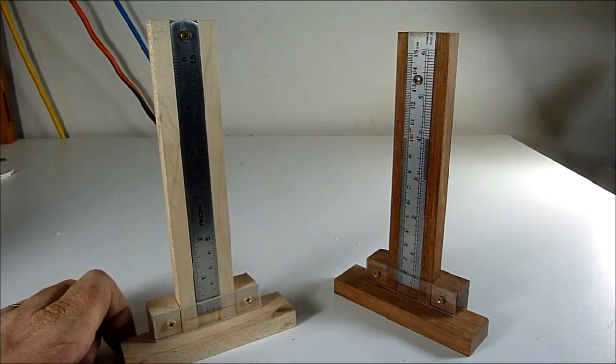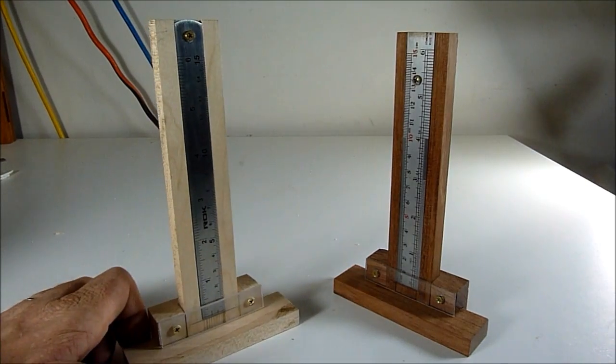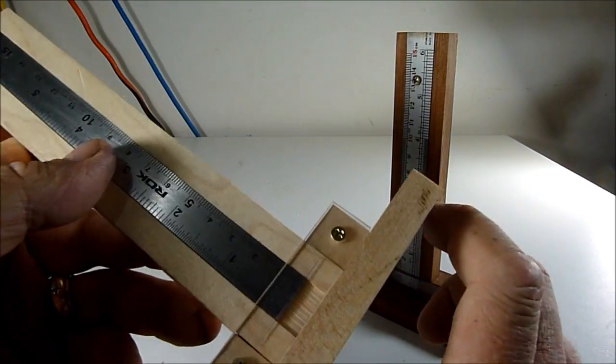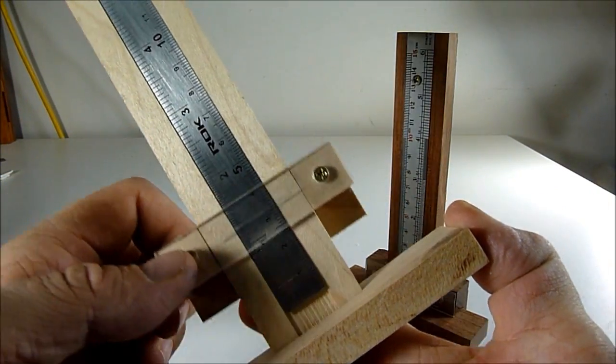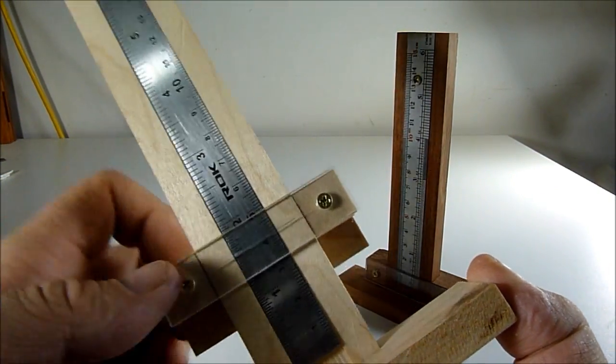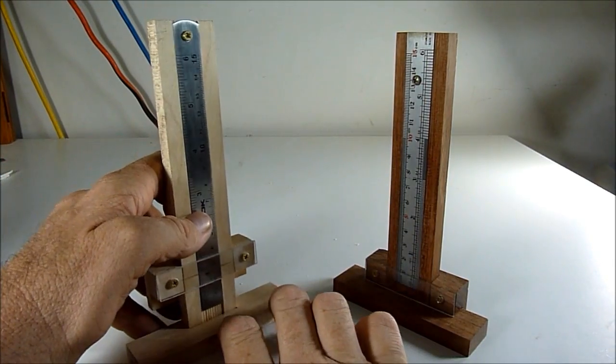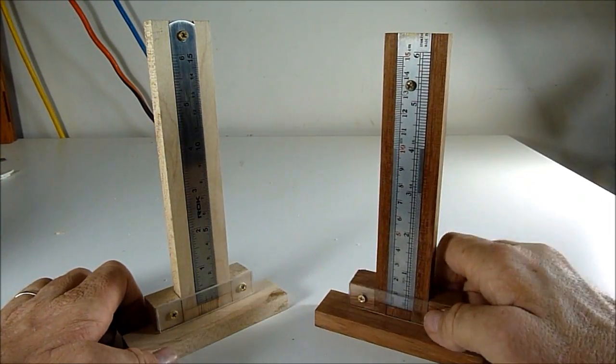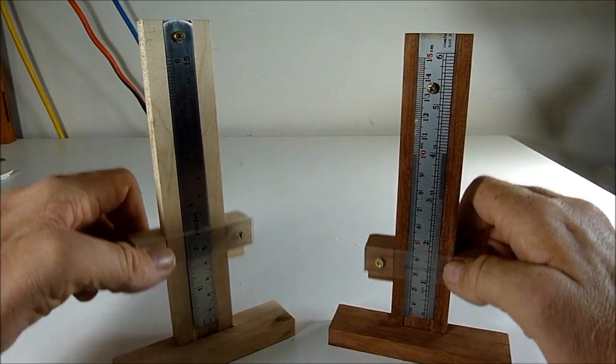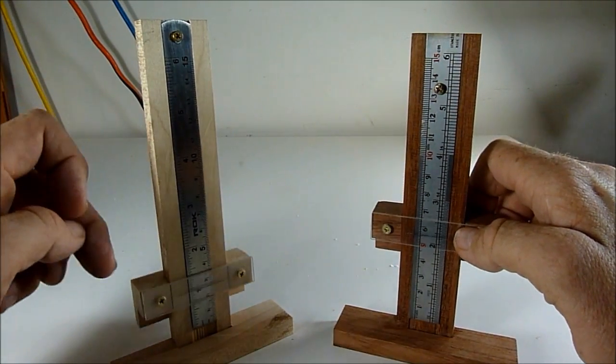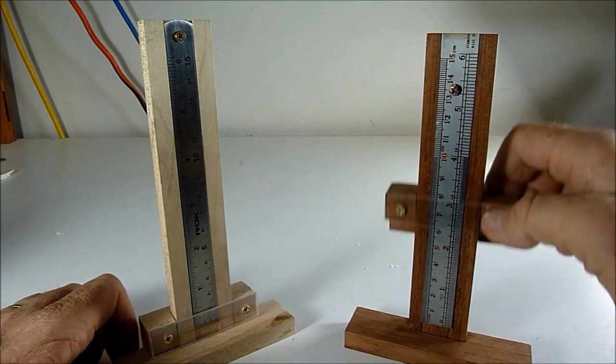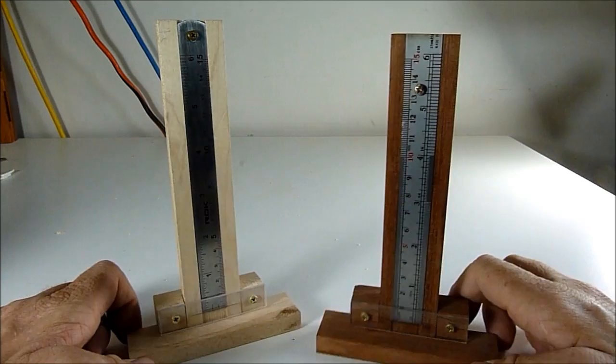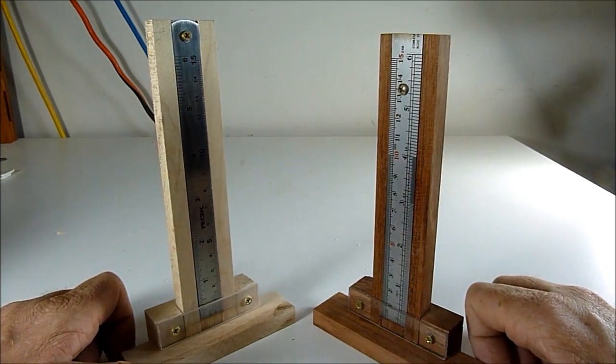Here I finished my second height gauge. This one I used maple, a lighter wood. I like this one better because you can see the black line. It reads better I think, but they both work quite well. I may just put a coat of lacquer on them, make them look real nice.